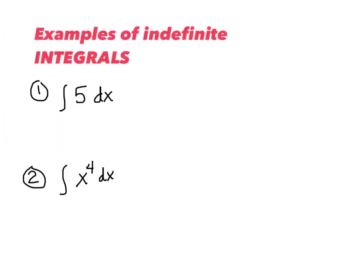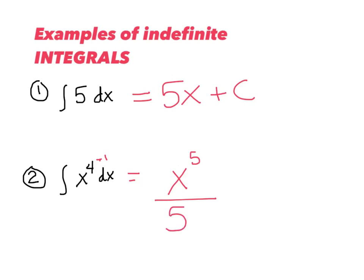Let's go through some examples. First, integrate 5 with respect to x — in your head you're saying, who do I take the derivative of to get 5? That answer is 5x plus any number, so we say plus c. Number 2 is similar to the power rule: I'm integrating, so I add 1. I get x to the 5th, and now divide by that same number — x to the 5th over 5, plus c.